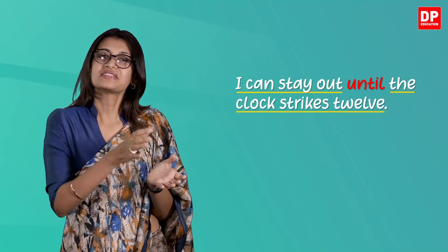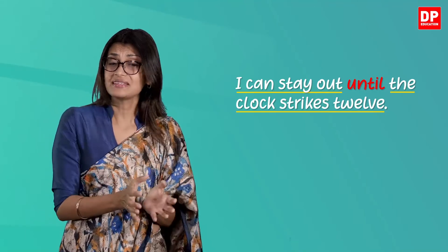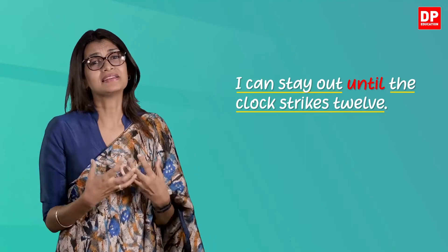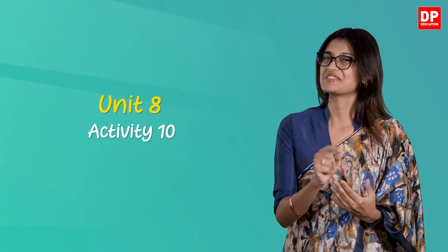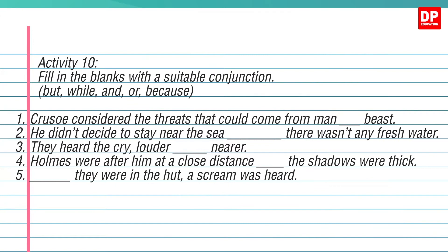The independent clause could stand alone as a sentence, but the dependent clause depends on the independent clause to make sense. Now let's look at Unit 8, Activity 10 and do this exercise together. Fill in the blanks with a suitable conjunction: Crusoe considered the threats that could come from man or beast. He didn't decide to stay near the sea because there wasn't any fresh water. They heard the cry louder and nearer. Holmes was after him at a close distance, but the shadows were thick. While they were in the hut, a scream was heard.